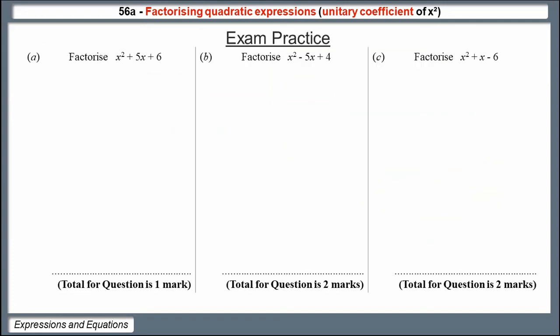Now there are three exam-style questions for you to practice. You can pause the video, have a go, then come back to check. Question A: factorize x-squared plus 5x plus 6. List pairs whose product is plus 6: plus 1 and plus 6; minus 1 and minus 6; plus 2 and plus 3; minus 2 and minus 3. The pair that adds to make plus 5 is plus 2 and plus 3, so the answer is bracket x plus 2, bracket x plus 3. The order of the brackets doesn't matter.